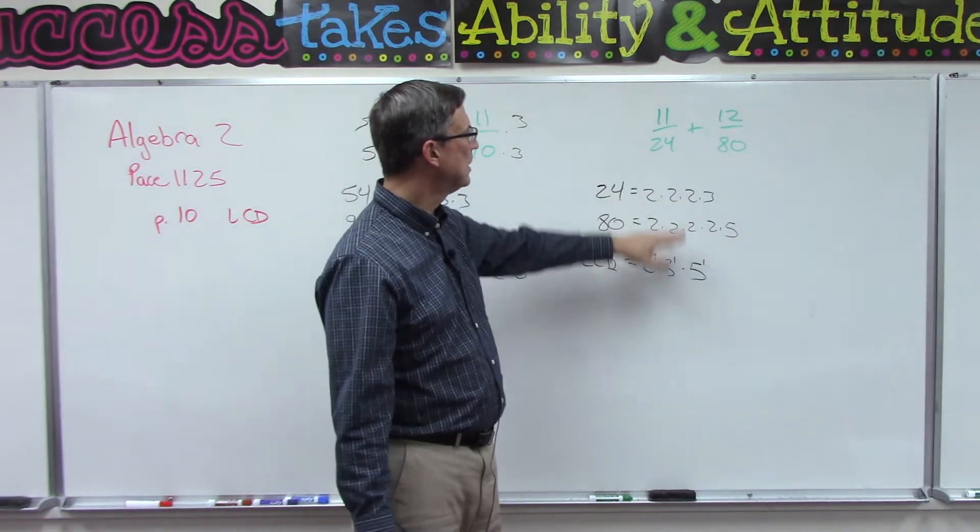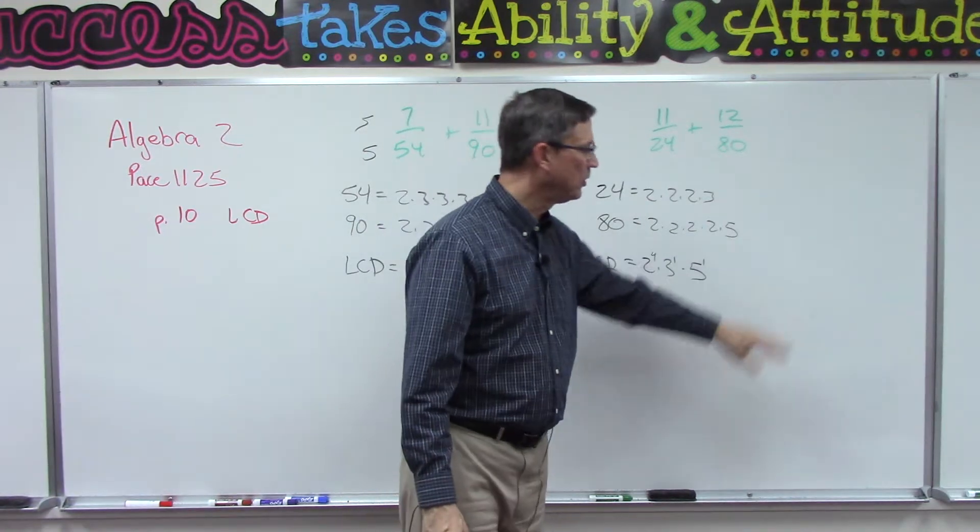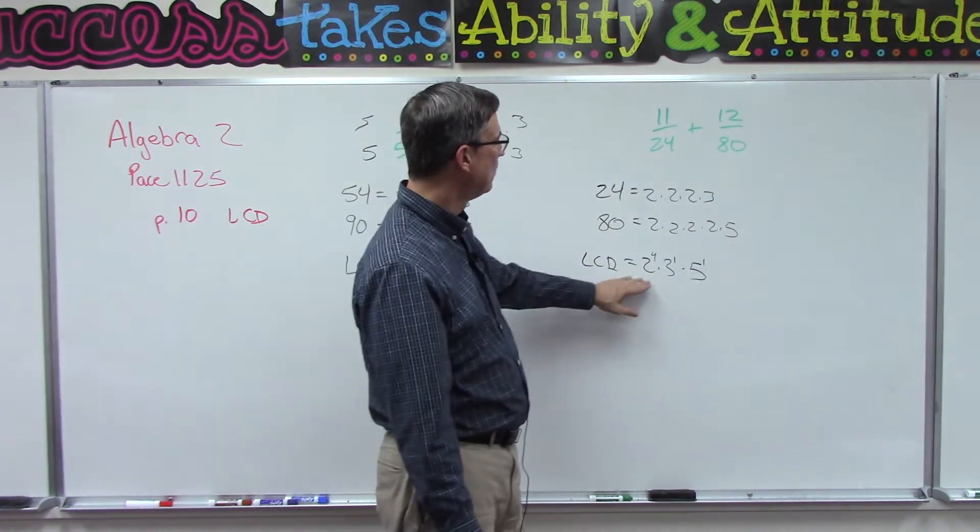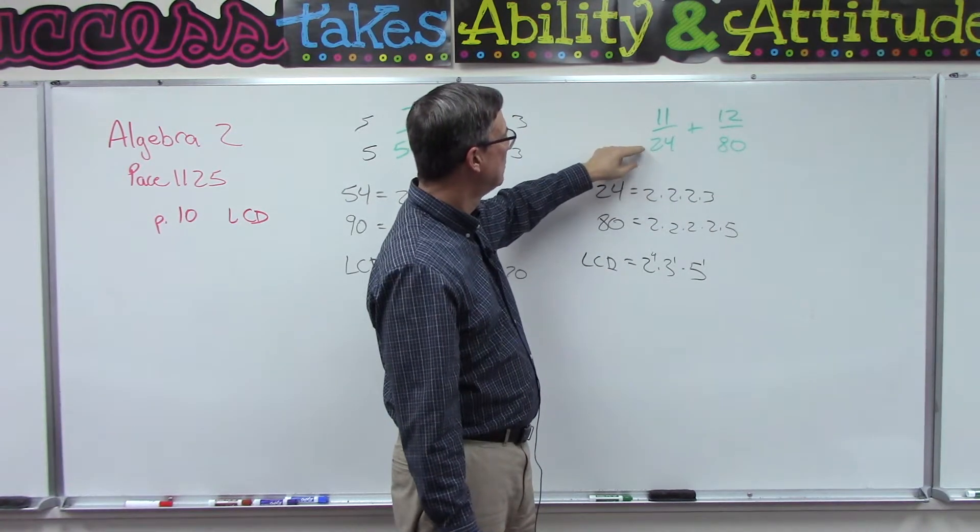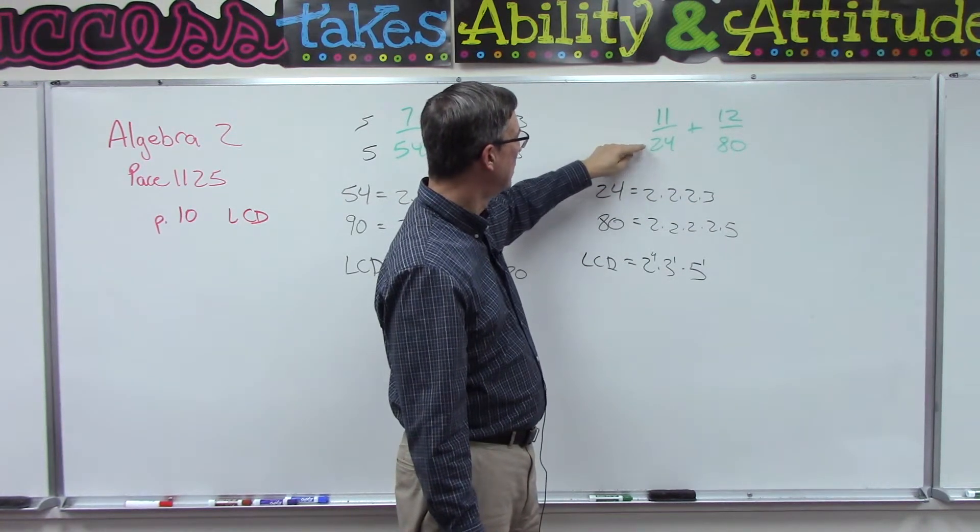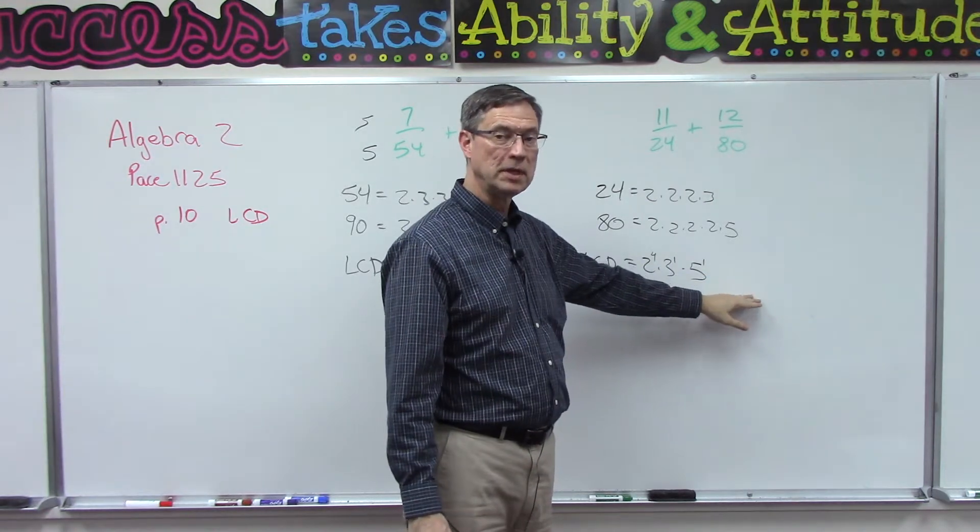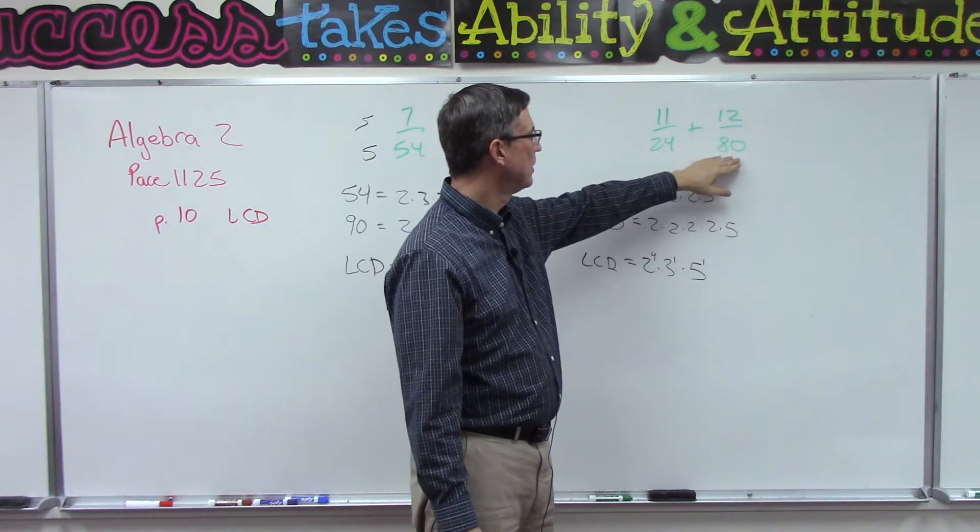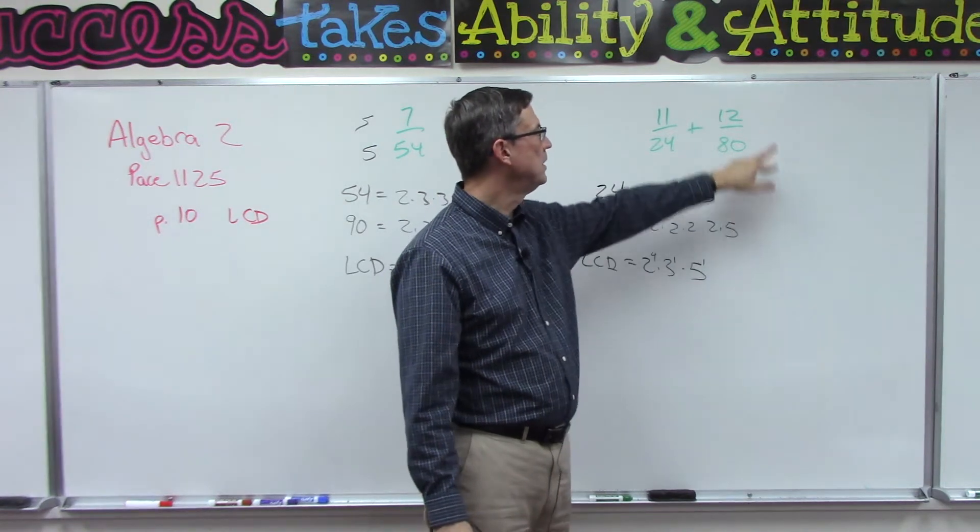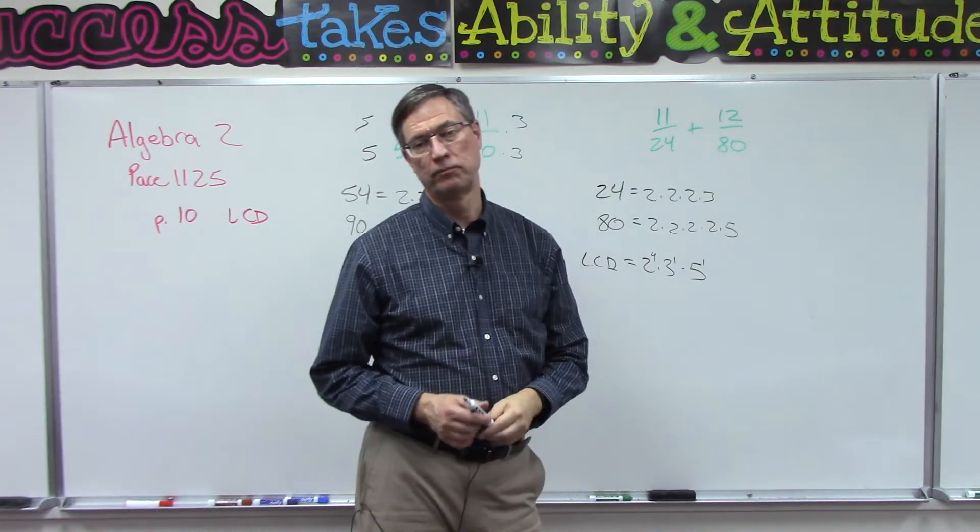I'm not going to finish that one for you. You can take that to the next step, figure out what the least common denominator is by multiplying these together, and then figure out what do I have to multiply times 24 to get that LCD, multiply top and bottom, and then the same thing here, what I multiply times 80 to get the LCD and multiply top and bottom.